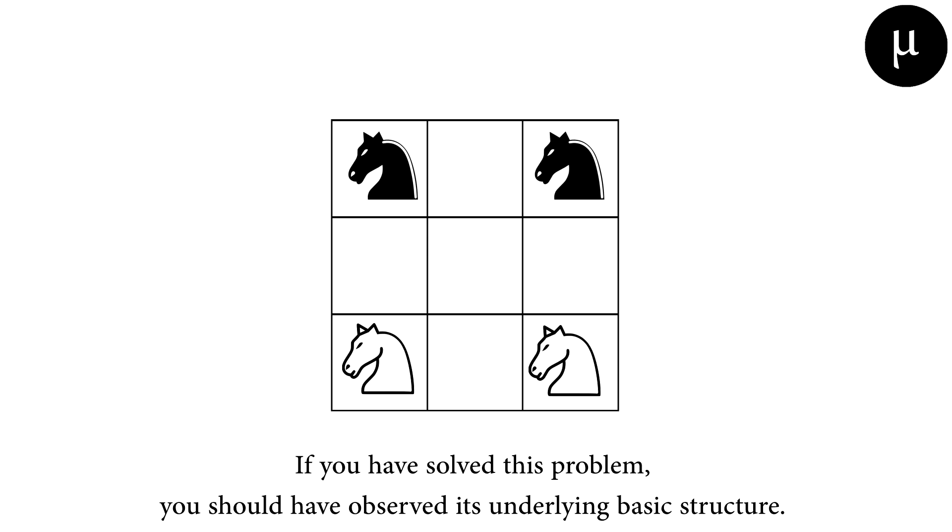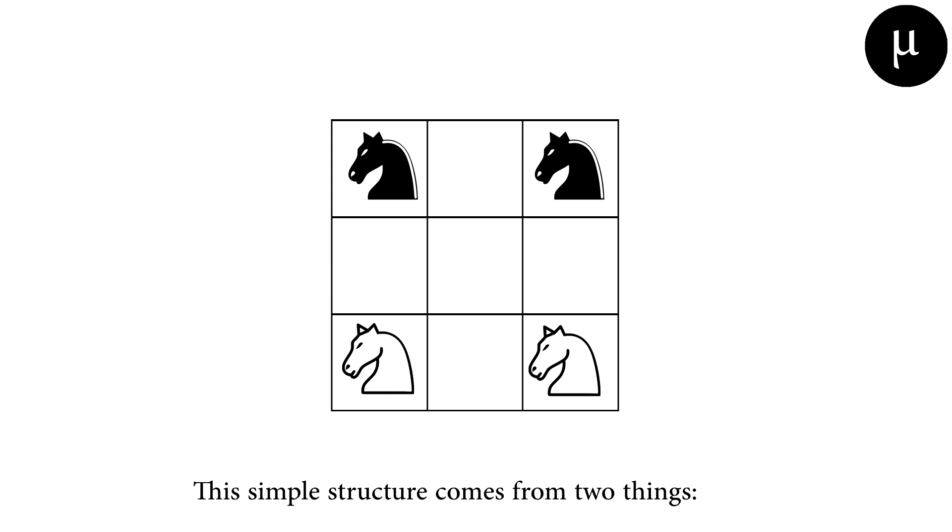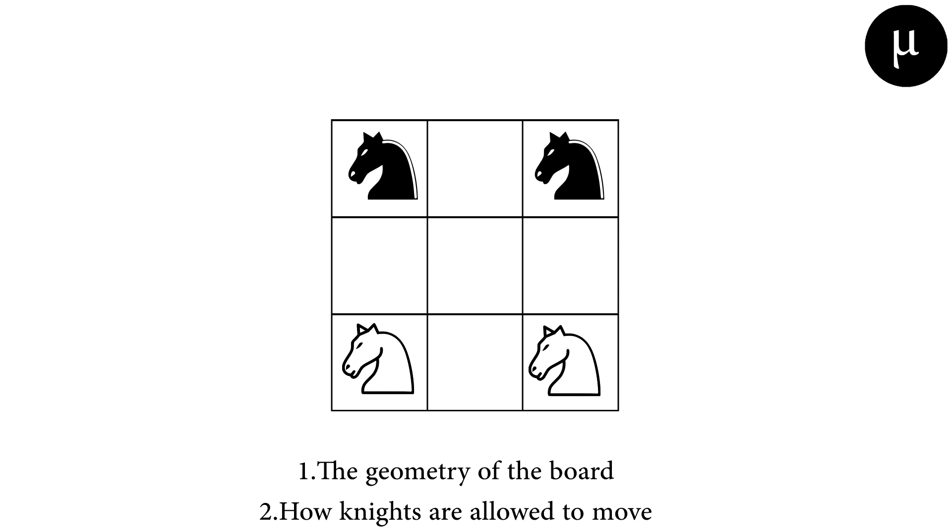If you have solved this problem, you should have observed its underlying basic structure. This simple structure comes from two things: one, the geometry of the board, and two, how knights are allowed to move.